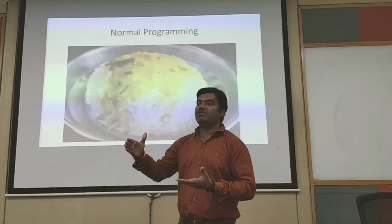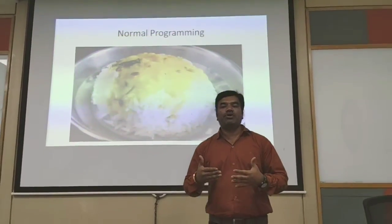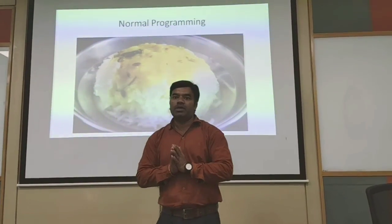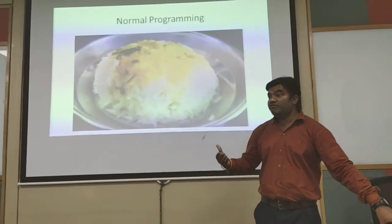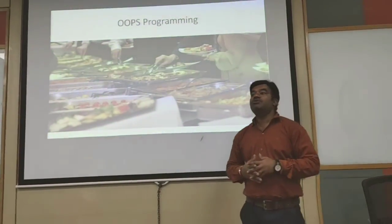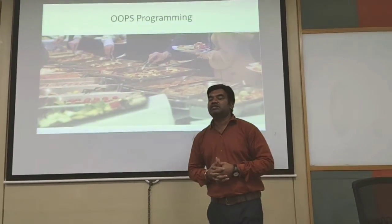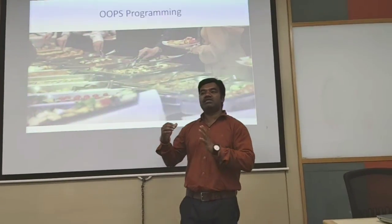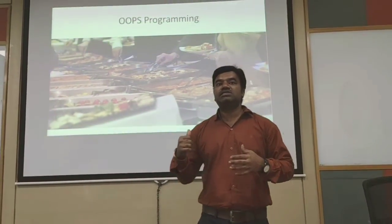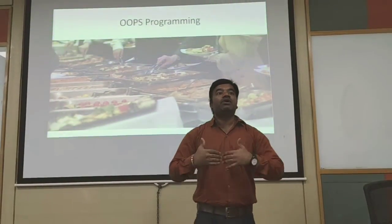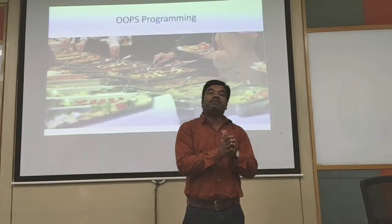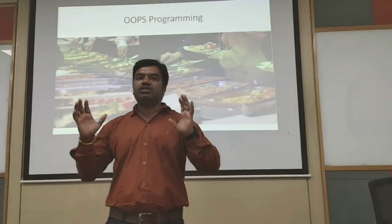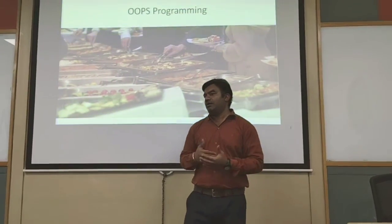Let's carry forward the same example. Suppose you don't have the patience to cook, so you take your friend out to a buffet. What happens at a buffet? Instead of convincing your friend to adjust with two or three dishes, you encourage them to eat 20 to 30 different recipes. Because in a buffet, everything is ready in place — you're not wasting your time or resources to prepare all the dishes. The dishes are already ready-made. You pay a fixed amount and eat as much as you want.